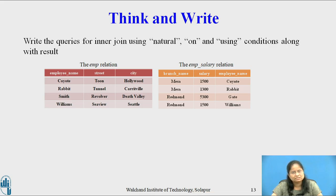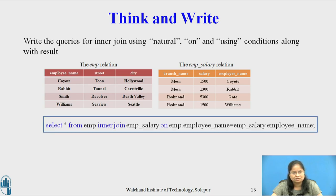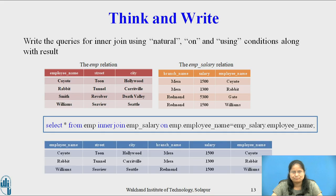Now consider the inner join using on condition for the following relations. The query is: SELECT * FROM emp INNER JOIN emp_salary ON emp.employee_name = emp_salary.employee_name. The result contains the common attribute employee name twice.